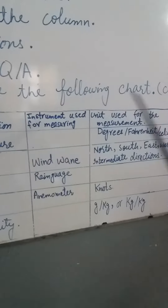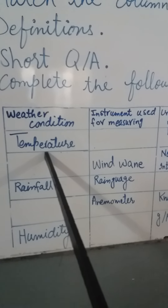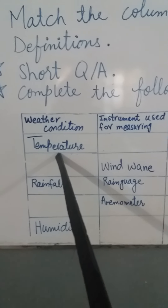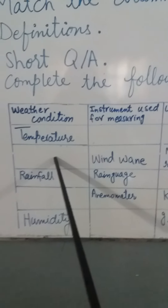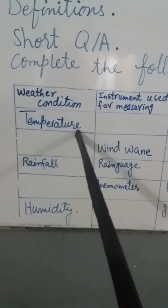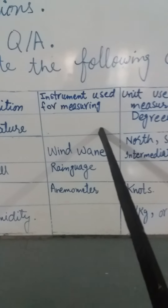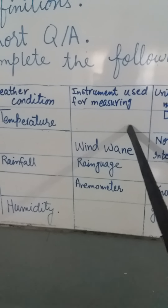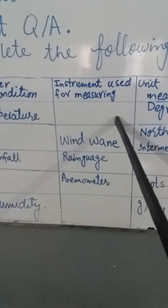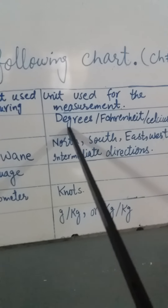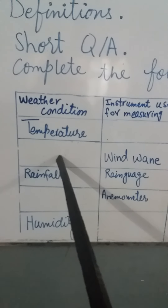As an overview of the assessment chart, for the weather condition temperature, the instrument used for measuring is the thermometer — as you know, a thermometer is used for measuring temperature. The unit used for the measurement is degrees Fahrenheit and degrees Celsius.